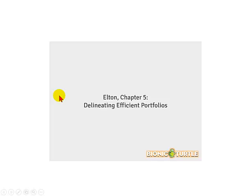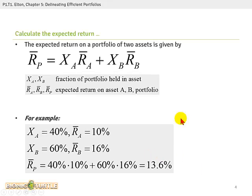And we start with chapter 5, Elton on Delineating Efficient Portfolios. And so here's a really basic application. We start with the expected return. So this would also be the first moment of the distribution or the weighted average, if you will.